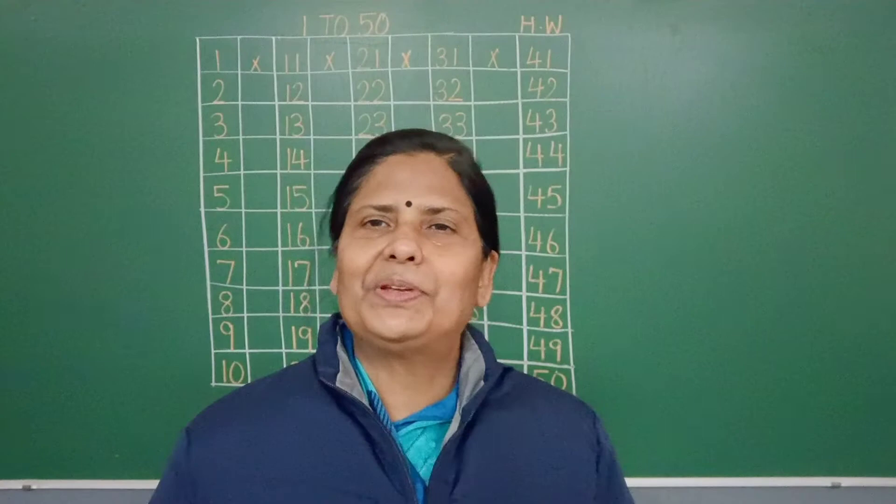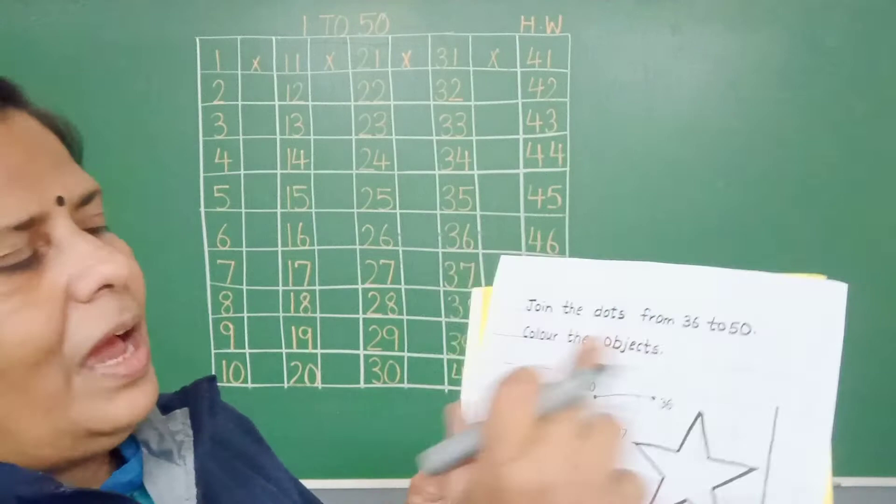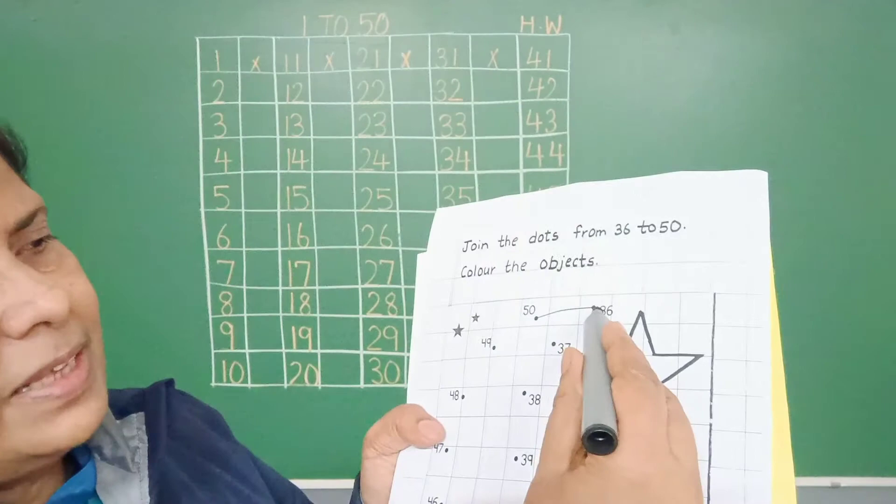So children, today we will do one interesting activity. You have to join the dots from 36 to 50 and you will color the objects.